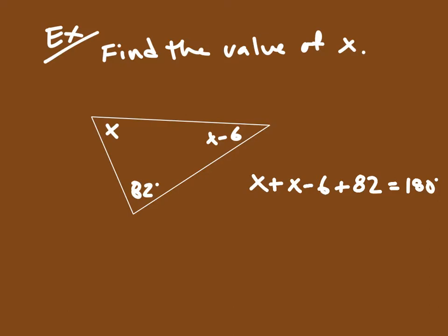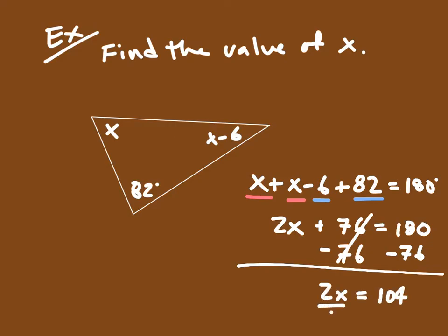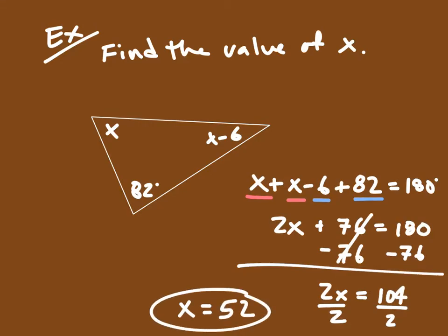We can then combine like terms. Combining x and x gives us 2x, and combining negative 6 and 82 gives us 76. So 2x plus 76 is equal to 180. Subtracting 76 from both sides gives us 2x equals 104. Dividing both sides by 2, we get x is equal to 52. That's how we set up and solve an equation like that.